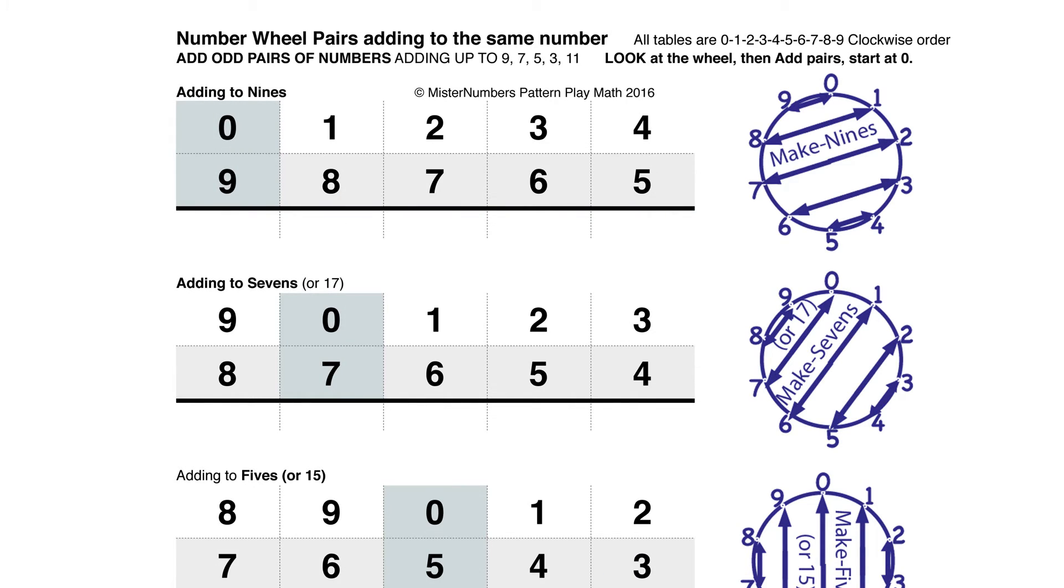The third reason number wheels are effective is that kids learn pairs of number bonds that add up to the same number. Number wheels become a structure where kids can see the big picture, and missing facts are not devastating, and they can figure out a fact that they're not sure about.